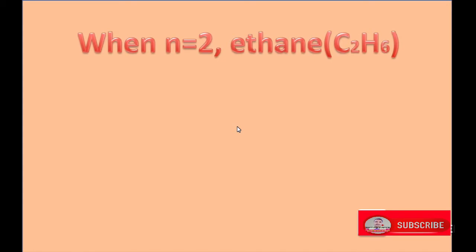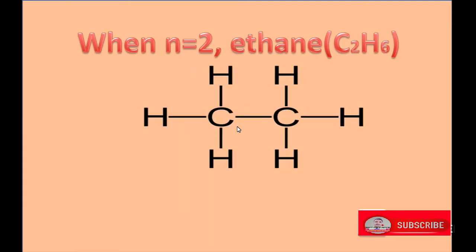When N equals 2, the alkane is ethane, having molecular formula C2H6, in which 2 carbon atoms are surrounded by 6 hydrogen atoms. Each carbon atom is bonded with 3 hydrogen atoms and 1 carbon atom by single covalent bond.